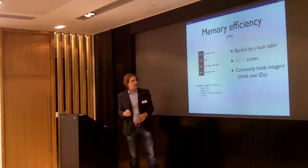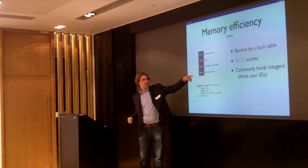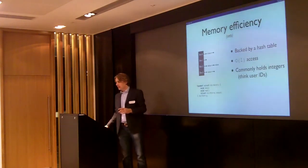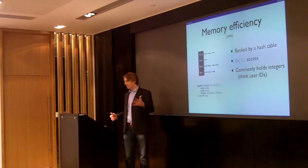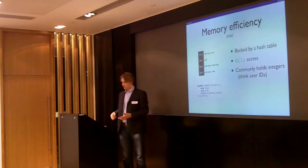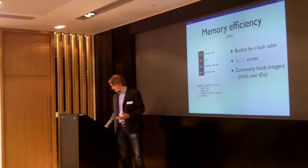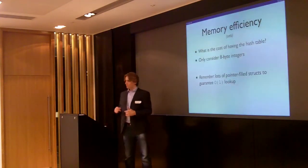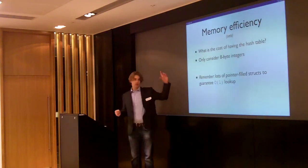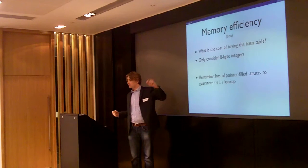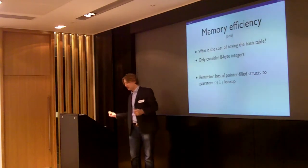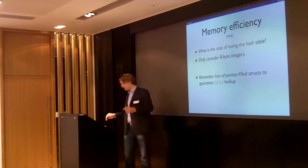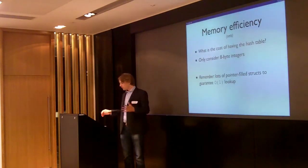So we have constant-time access, and sets commonly hold integers — for something like 'users 1, 2, and 5 are now online,' you store 1, 2, and 5 in this set. But what's the cost of having this hash table? You have the hash slots themselves, and for every value a pointer to the next value, a pointer to the value, a pointer to the key, and so on. It's overhead all over the place.